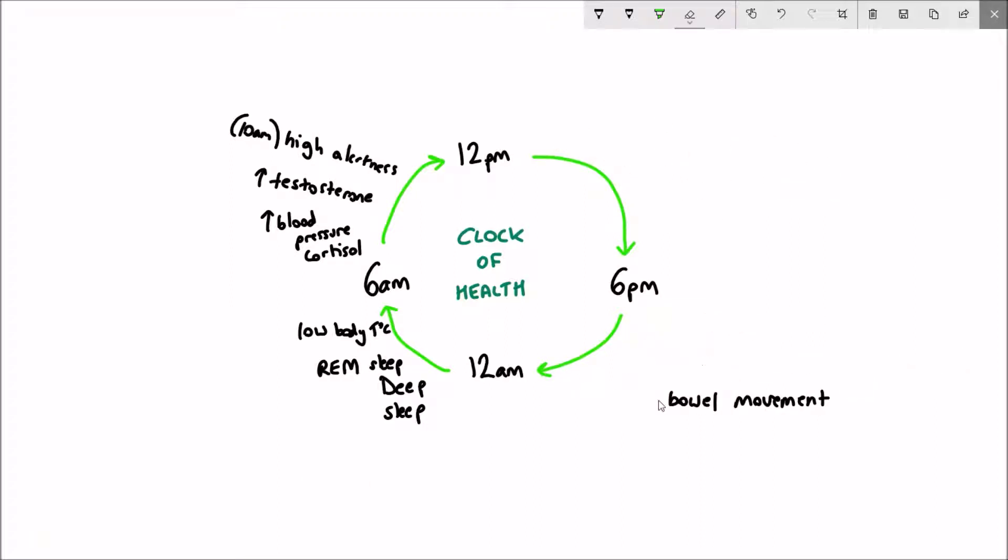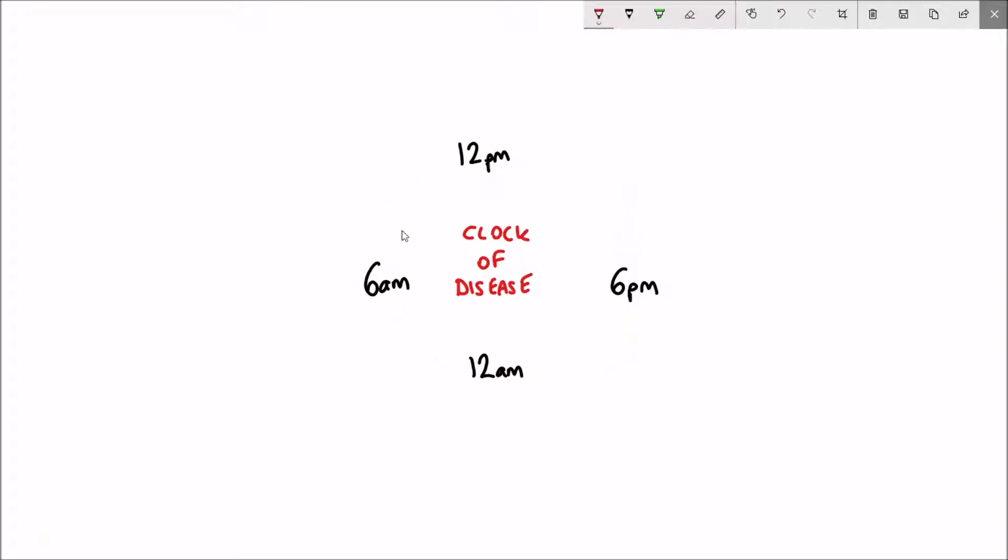In addition to the clock of health, you also have the clock of disease, which is pretty much as a consequence of the daily fluctuations and different activities in the body. You have different diseases showing their symptoms or phenotypes at different times of the day as well. For example, where blood pressure and cortisol levels are high in the morning, you also see an increased rate of people having myocardial infarction, angina and sudden cardiac death.